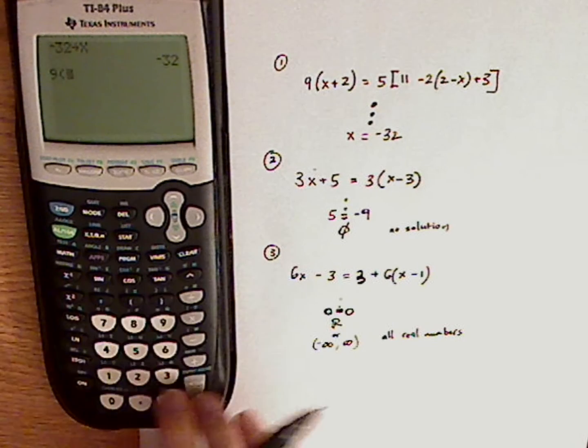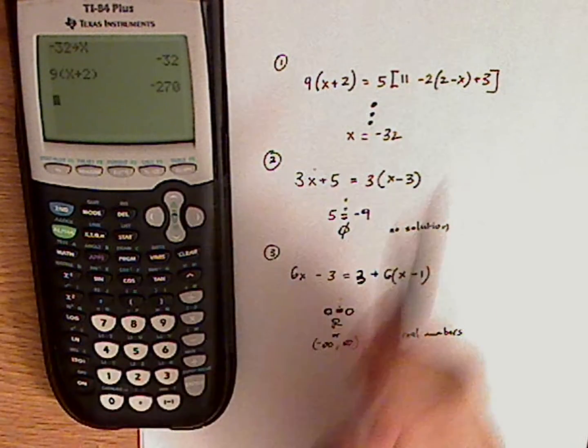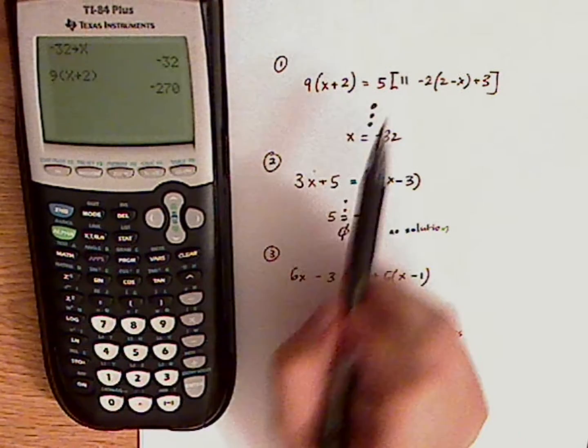So 9 parentheses x plus 2. And what I'm trying to see to see if it's a solution is to see if both sides are equal to each other.